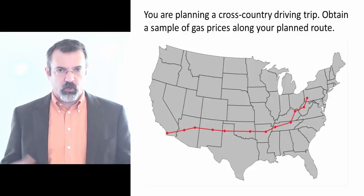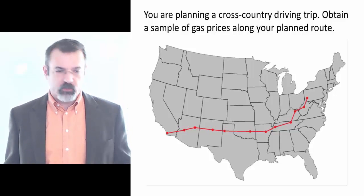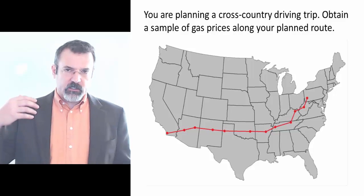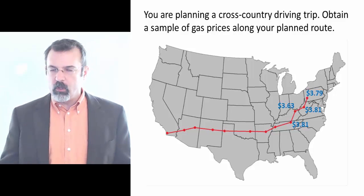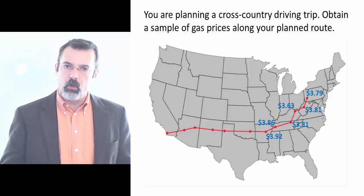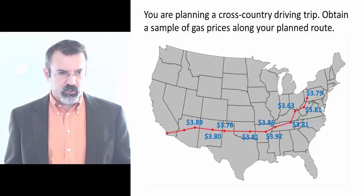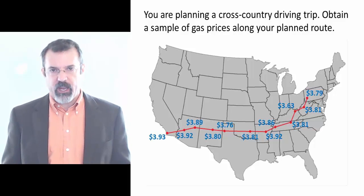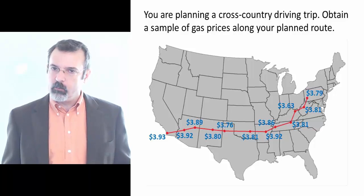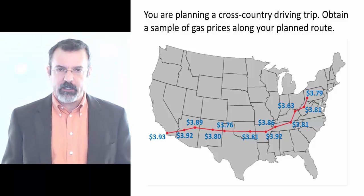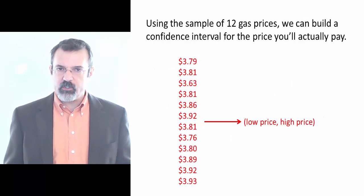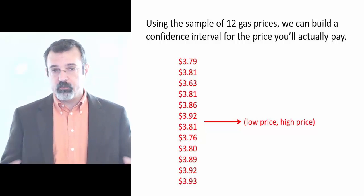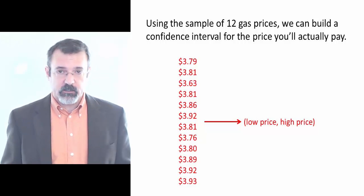Suppose you're planning a cross-country trip and you want to know how much you're going to pay for gas. You collect a sample of gas prices at 12 points along your planned route. The problem is you don't know exactly where you're going to stop for gas, so you don't know exactly what you're going to pay. But using these 12 observations, we can build a confidence interval that tells us a range of prices that you're likely to pay.